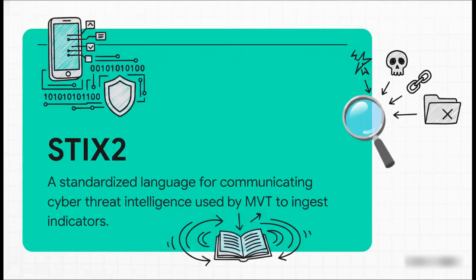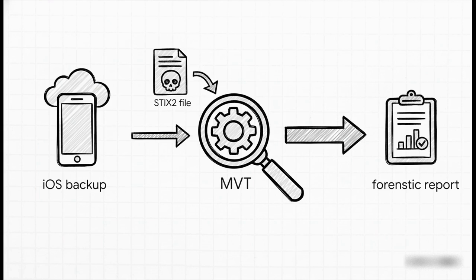MVT's power comes from ingesting indicators of compromise through a standardized format — STIX2, the machine-readable language for cyber threat intelligence. It allows malicious domains, file hashes, and process names to be programmatically applied to the forensic analysis of a device backup. A practical workflow on the command line: an investigator points the tool, 'mvt-ios check-backup', at a fully decrypted iOS backup, feeds it a STIX2 file containing all the known IOCs, and pipes the output to a formal report path. This is what evidence-based, professional digital forensics looks like in action.